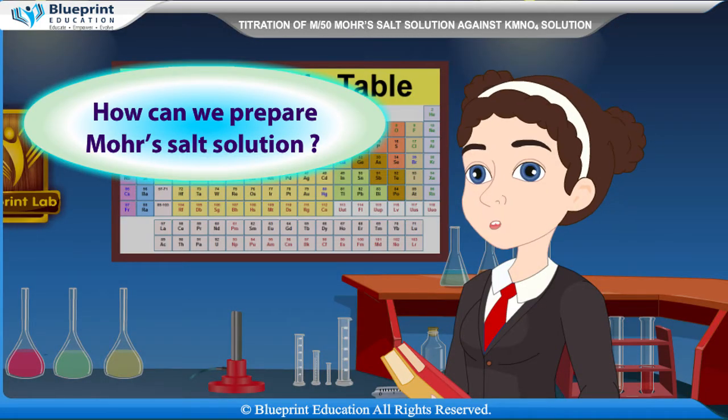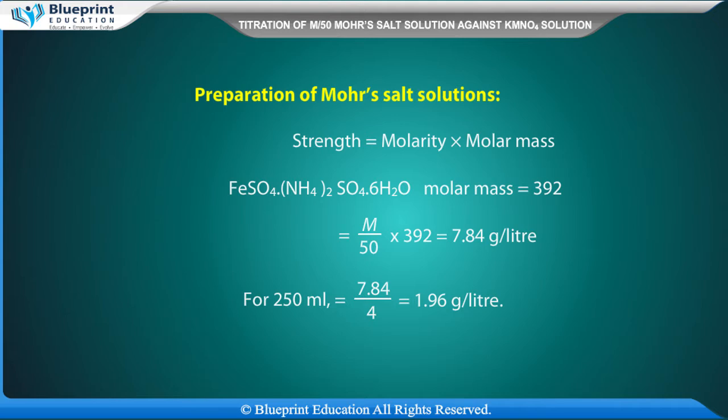Student: How can we prepare Mohr's salt solution? Using the following formula — Preparation of Mohr's salt solution: Strength = Molarity × Molar mass of FeSO4·(NH4)2SO4·6H2O. Molar mass = 392. For M/50: strength = M/50 × 392 = 7.84 g/L. For 250 ml: 7.84 ÷ 4 = 1.96 grams.